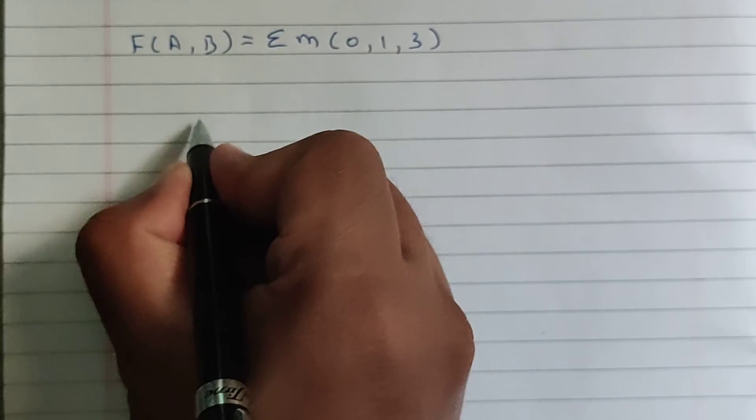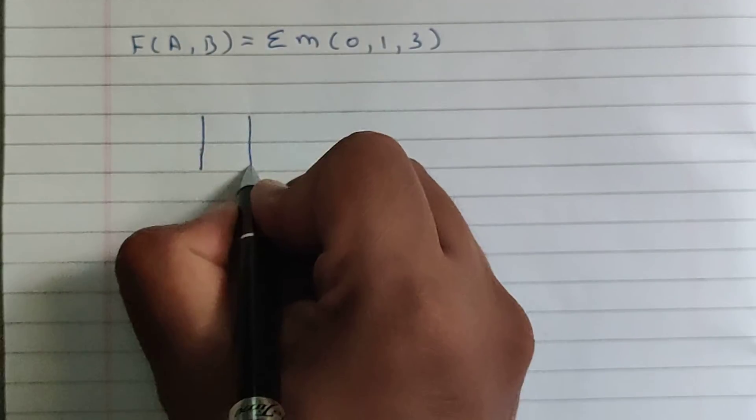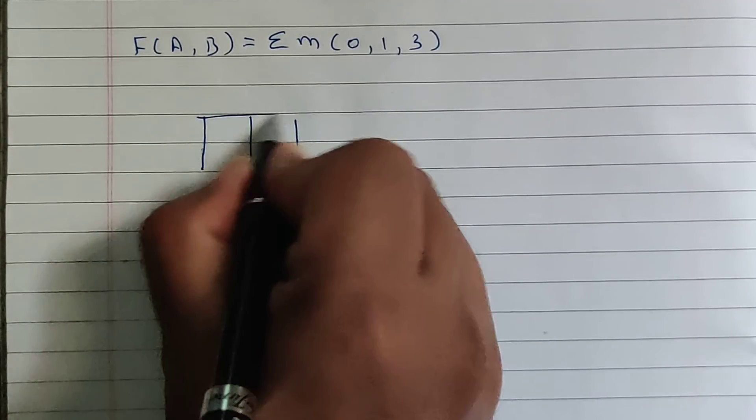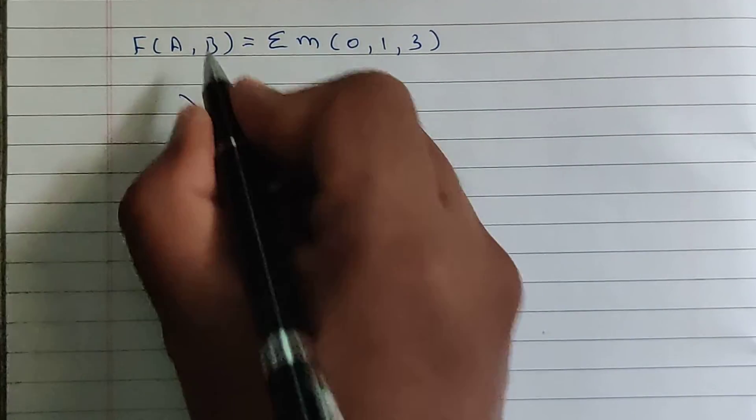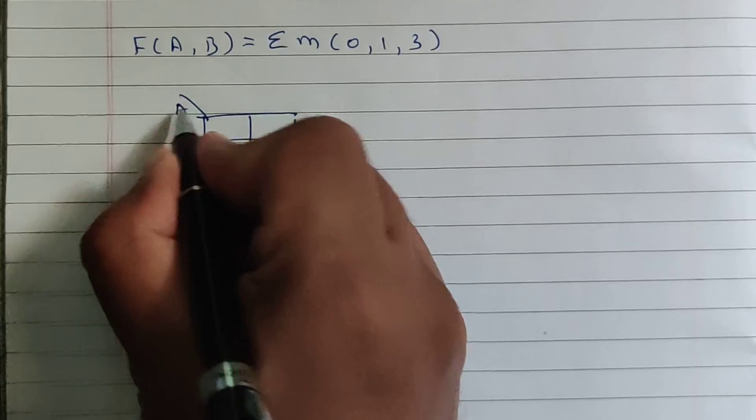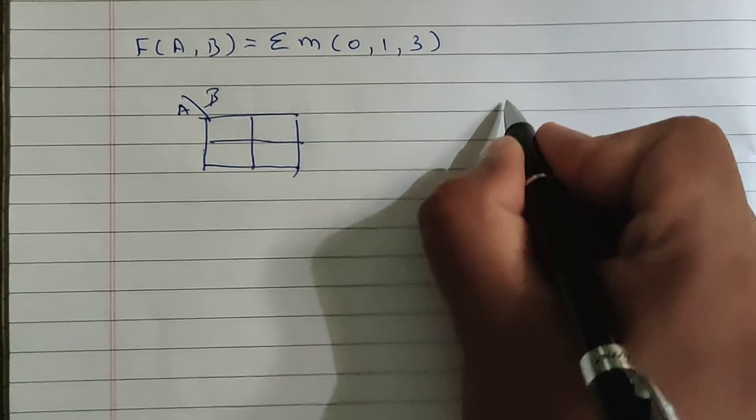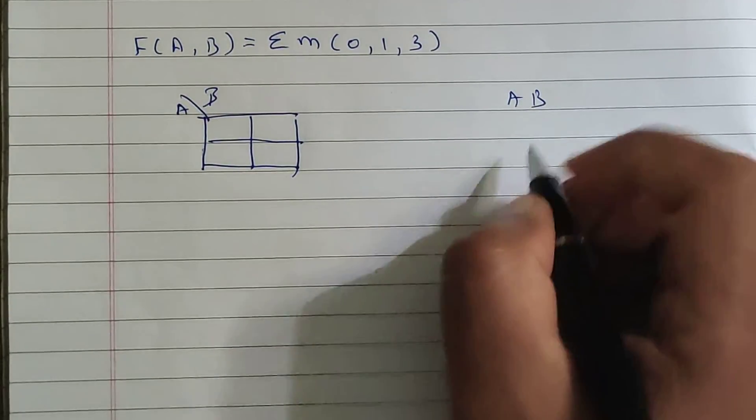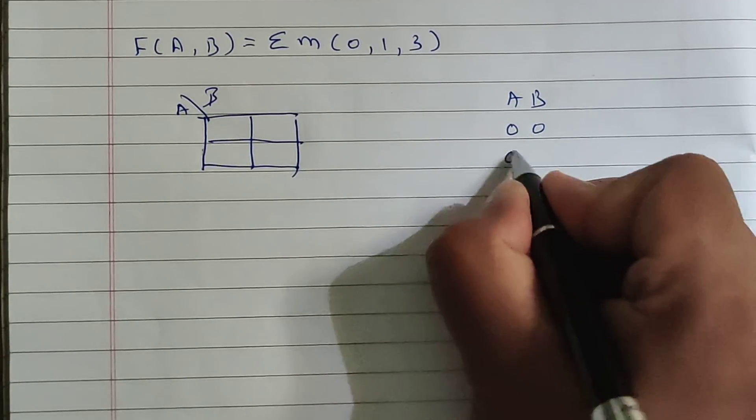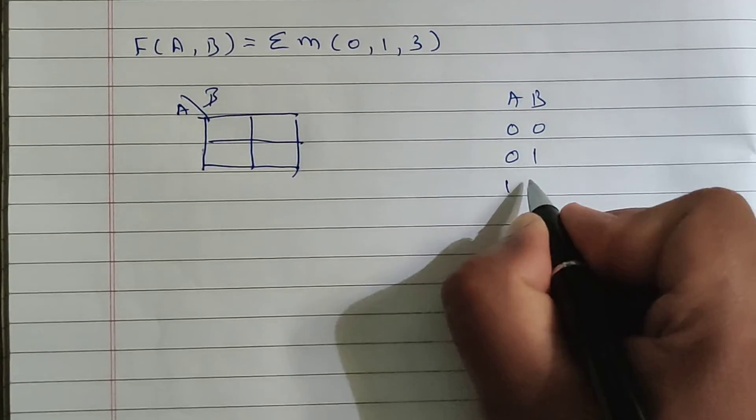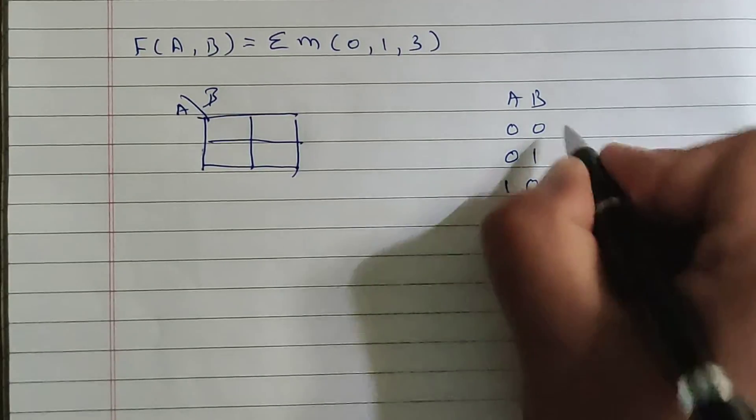Now to solve two variable k-map, we will draw a box with two rows and two columns. The two variable names are A and B. Now AB can take two values: either both will be 0 0 or 0 1 or 1 0 or 1 1.